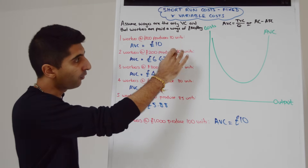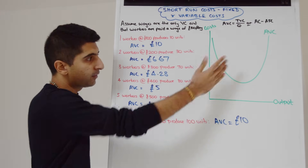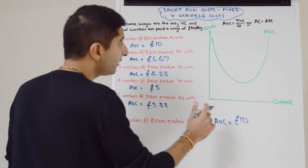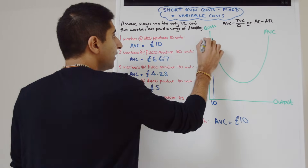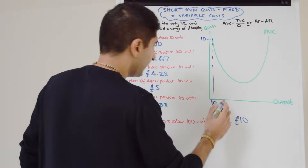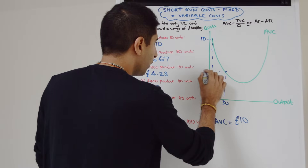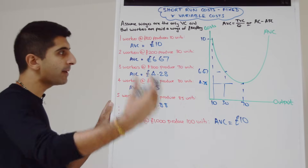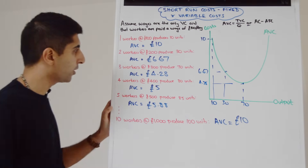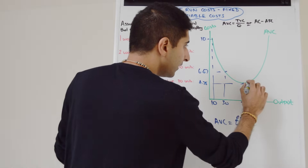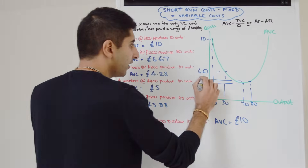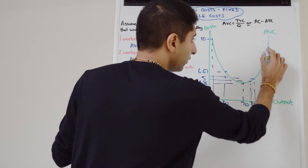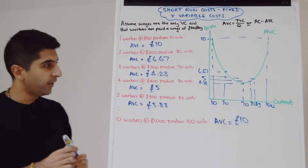So we can see that average variable cost will fall, but when the law of diminishing returns kicks in it will start to rise. We can put these numbers to our diagram: for the first 10 units, AVC is £10; at 30 units, AVC is £6.67; at 70 units we hit our minimum at £4.28. Then diminishing returns kick in — at 80 units AVC is £5, at 85 units it's £5.88, and at 100 units we're back to £10. The numbers very much fit the diagram.